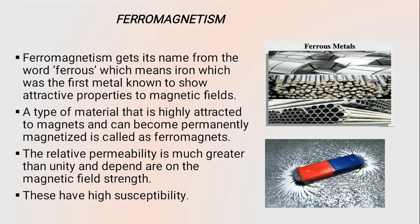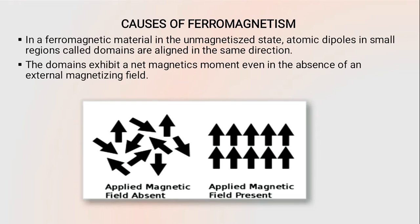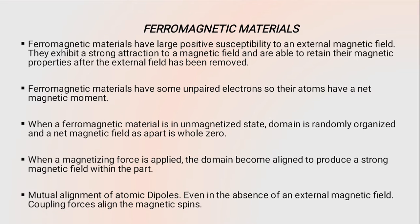Ferromagnets have permeability greater than one and also have high susceptibility. As a cause of ferromagnetism, iron has magnetic domains which are random in orientation. When placed in an external magnetic field, they become parallel and remain parallel even after the removal of the magnetic field, as the diagram shows. Hence, iron gets magnetized permanently.